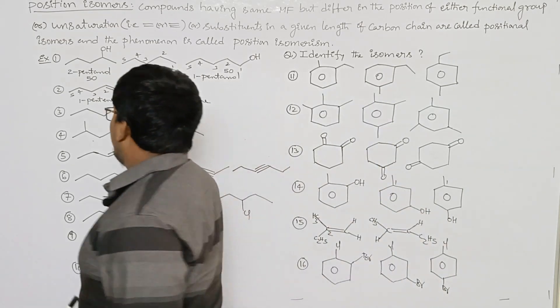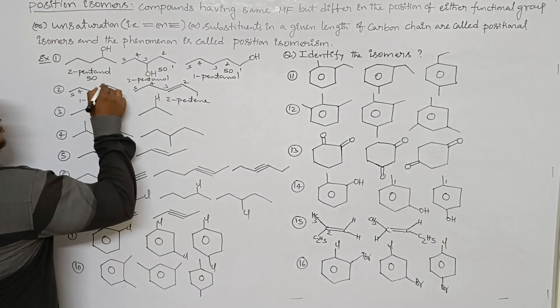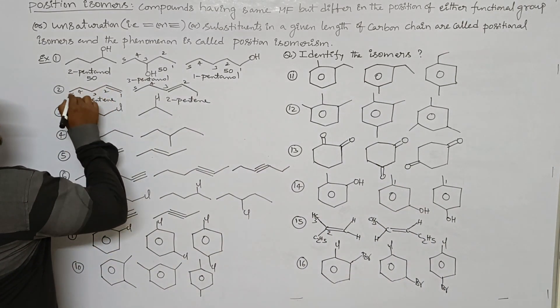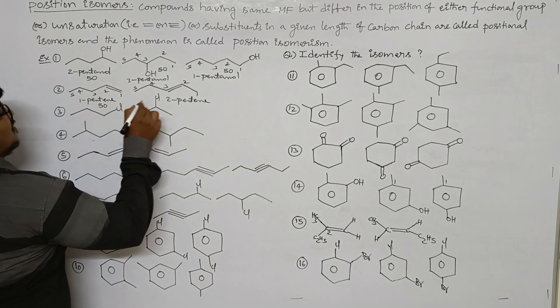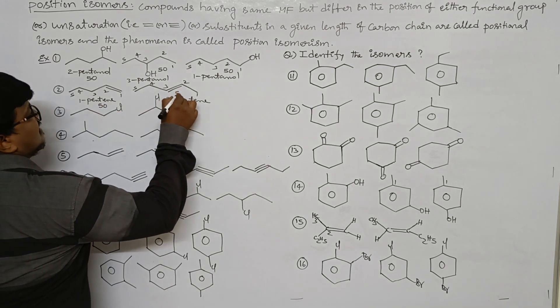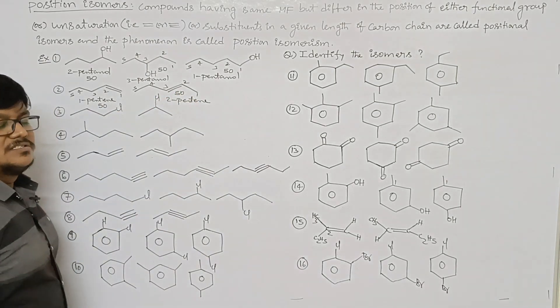The isomeric number for the first compound is 50, and the second compound is also 50. Both are positional isomers.